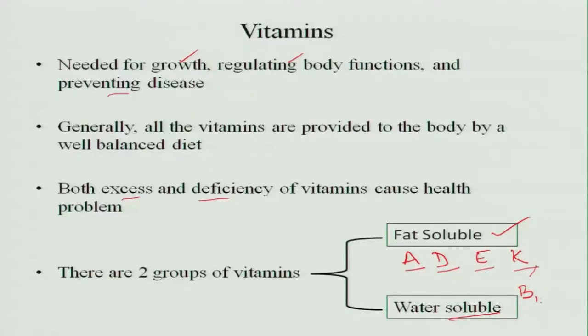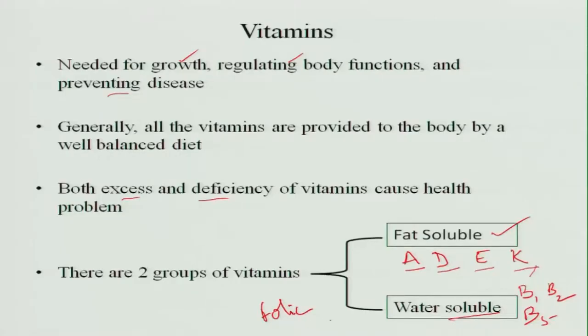Water-soluble vitamins include thiamine, riboflavin, niacin, pantothenic acid, folic acid and vitamin B12. Folic acid and vitamin B12 are important water-soluble vitamins — their deficiency may cause anemia, and folic acid deficiency causes neural tube defects in children. Folic acid and vitamin B12 are very important for the formation of blood and the maturation of red blood cells, and therefore their deficiency causes anemia.